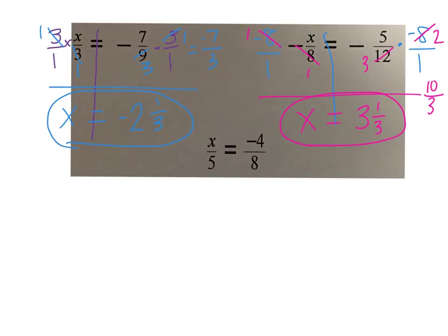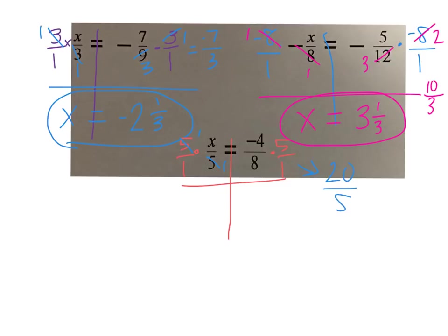Hopefully you went ahead and solved this last one. x over 5 equals negative 4 eighths. Let's keep ourselves organized — I can see it's dividing by a positive 5, so I'm going to multiply by positive 5 over 1 on both sides. I can cross-simplify: my 5 and my 5 can both turn into 1s. On the other side, 5 and 8 I can't simplify, and 4 and 1 I can't simplify, so I'm just going to multiply. 4 times 5 is 20, 8 times 1 is 8. It was a negative times a positive, so negative 20 eighths. On the left I get x.